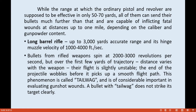But over the first few yards of trajectory, the distance varies with the weapon, and the bullet's flight is slightly unstable — the end of the projectile wobbles before it picks up a smooth flight path. This phenomenon is called tailwag, and it is of considerable importance in evaluating gunshot wounds. A bullet with tailwag does not strike its target cleanly and cannot achieve the desired effective range.